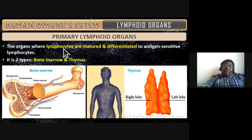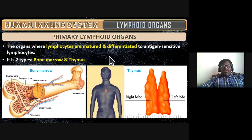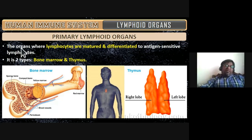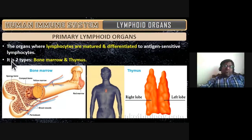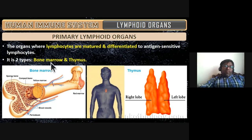Primary lymphoid organs are the organs where lymphocytes are matured and differentiated into antigen-sensitive lymphocytes — meaning they can react with antigens. The two types of primary lymphoid organs are bone marrow and thymus, producing B lymphocytes and T lymphocytes respectively.